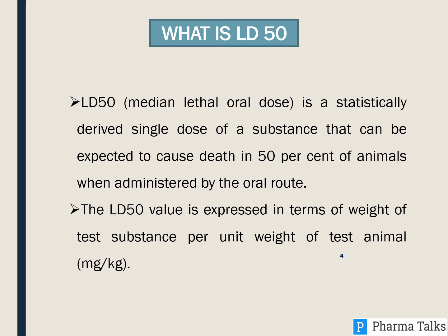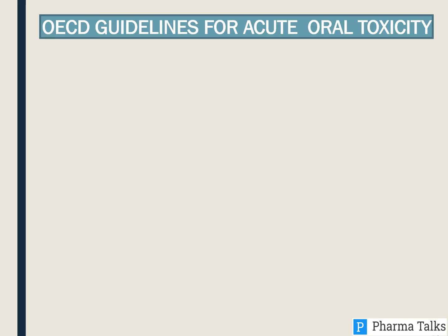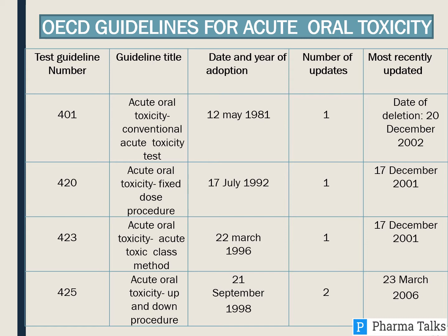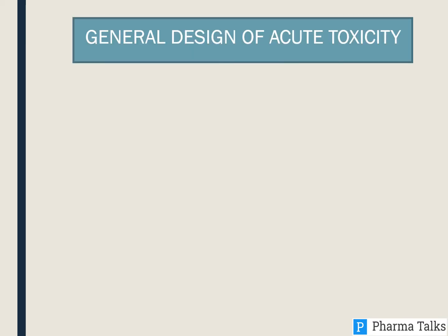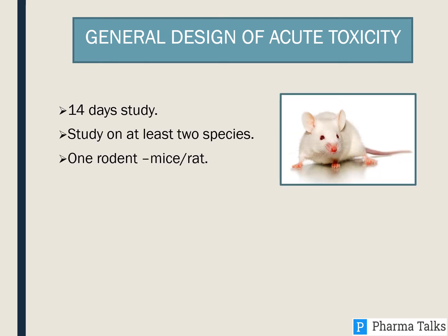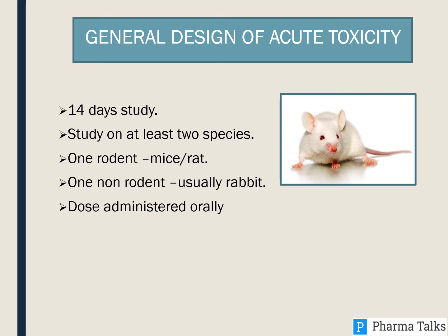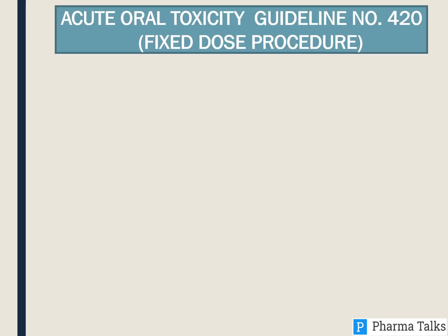OECD Guidelines for Acute Oral Toxicity include: 401 Conventional Acute Toxicity Test, 420 Fixed Dose Procedure, 423 Acute Toxic Class Method, and 425 Up and Down Procedure. General Design of Study: it is a 14-day study, done on at least two species — one rodent (mice or rat) and one non-rodent, usually rabbit. The dose is administered orally.